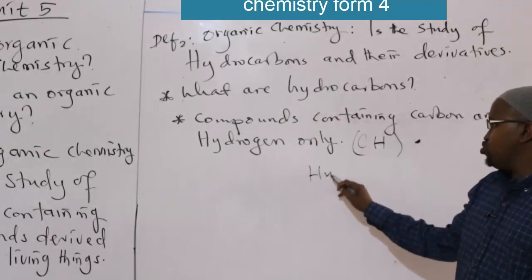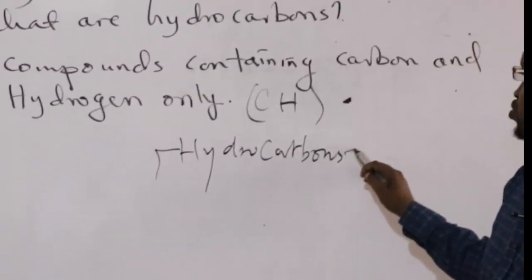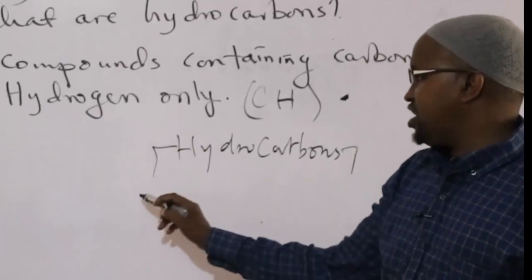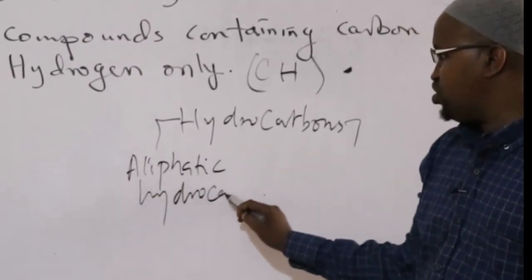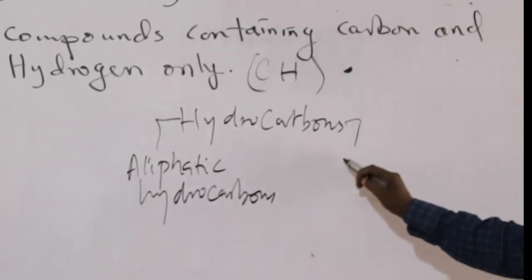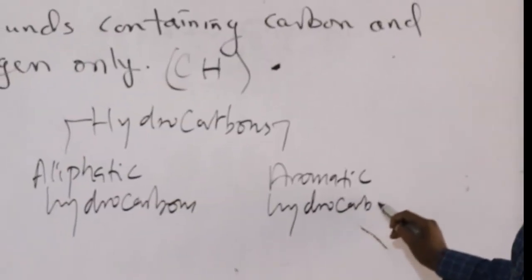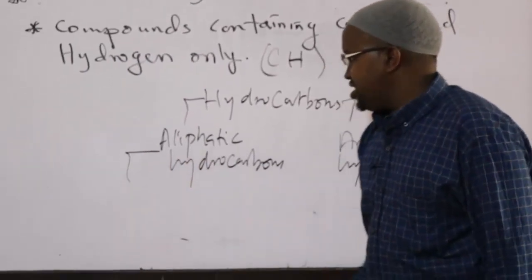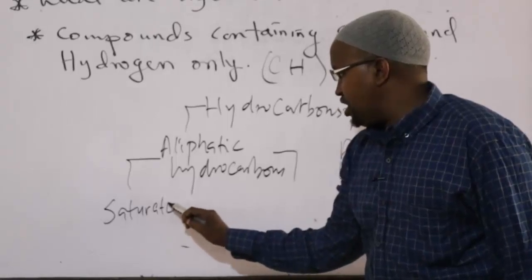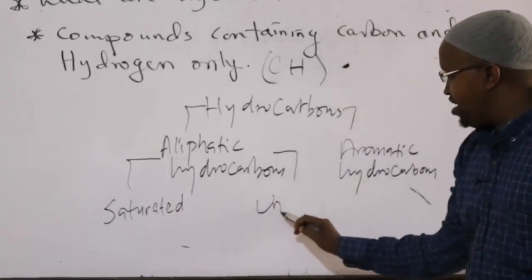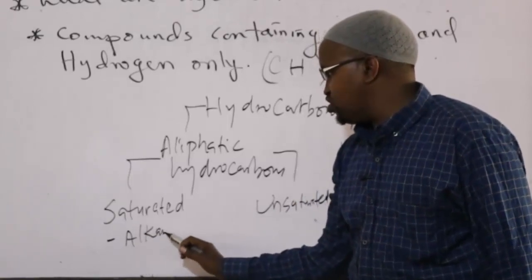Because of classification, hydrocarbons can be subdivided into two classes. Hydrocarbons can be subdivided into aliphatic hydrocarbons, which will be either saturated or unsaturated. Saturated hydrocarbons include alkanes.